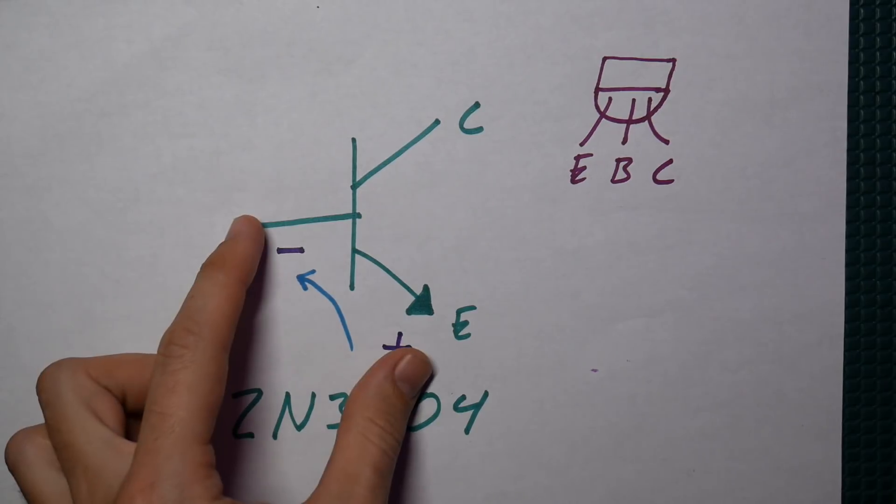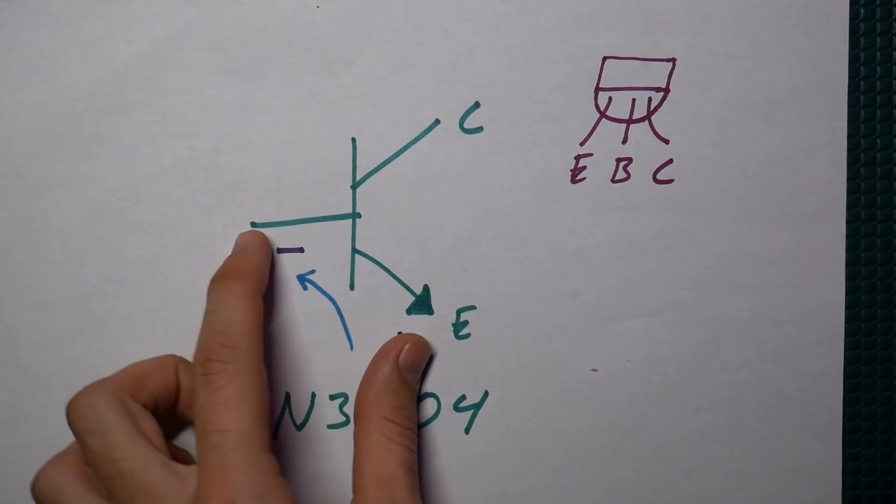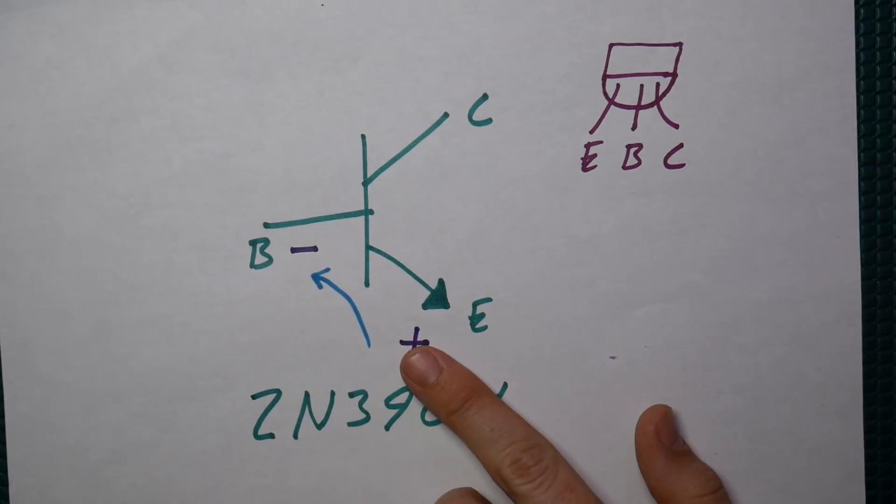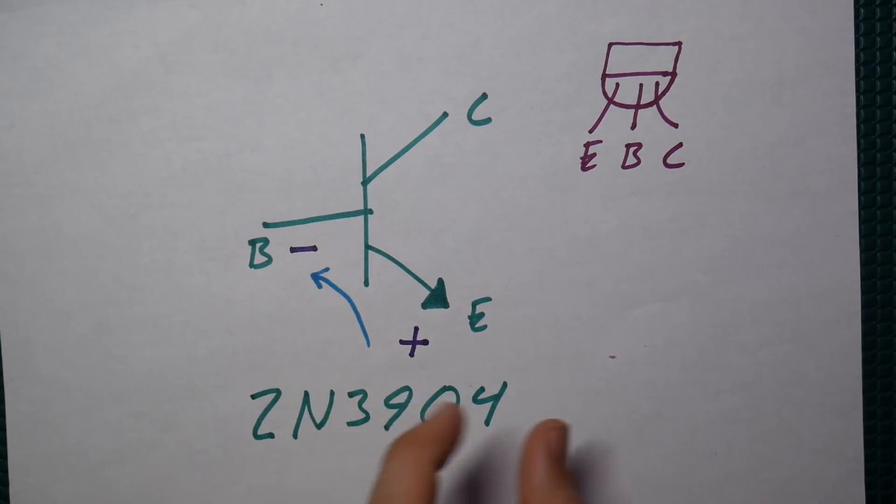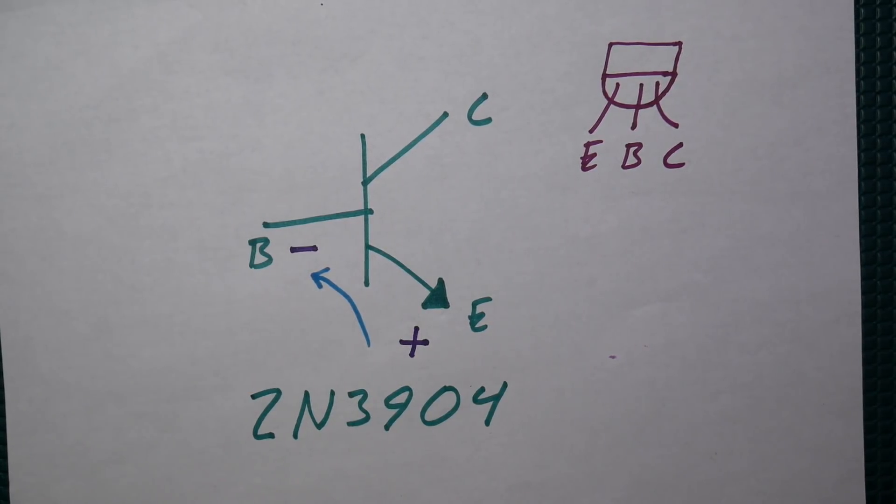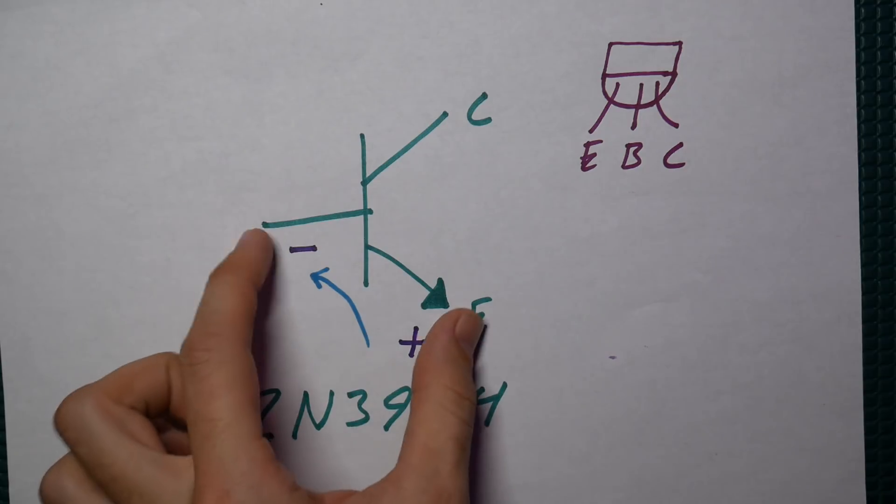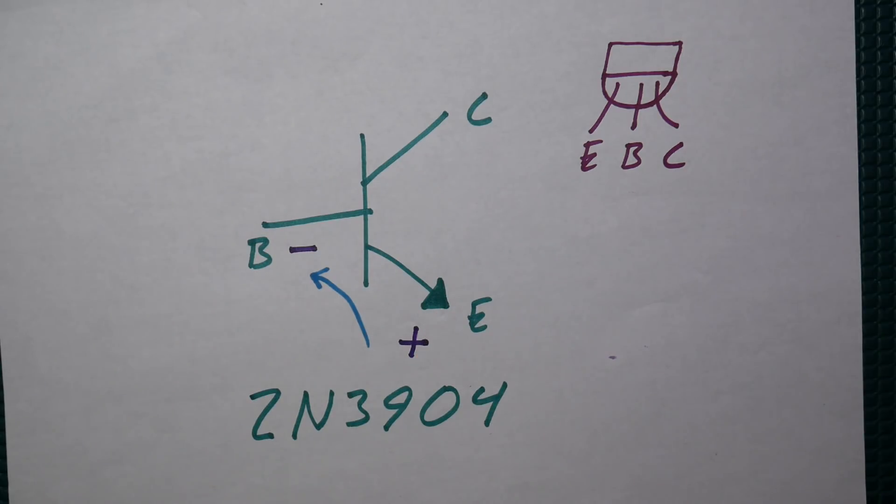And as you increase this voltage here, eventually you're going to conduct a current through the emitter to base. And of course, this happens when you hit the breakdown voltage of that junction. And so it's kind of like a Zener diode. And that's exactly what we're doing here in this circuit to regulate voltage.